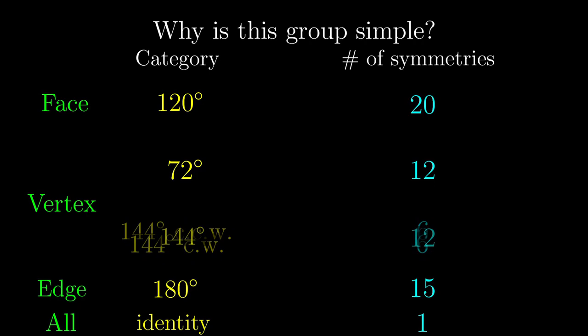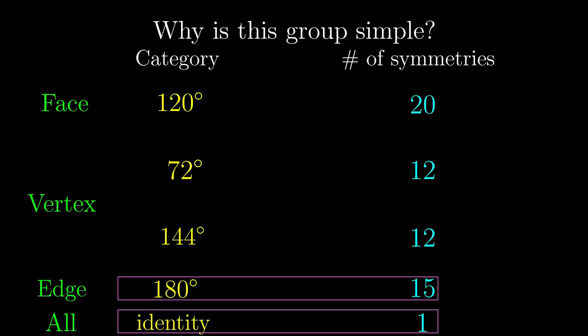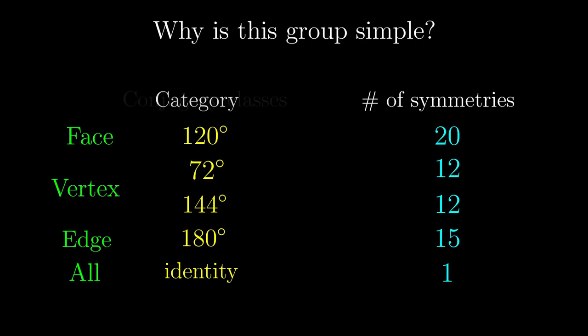By the exact same logic, we can merge the 72 degree rotations, as well as the 144 degree rotations. We can't merge the remaining two categories, so the categorisations are now complete.